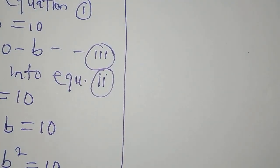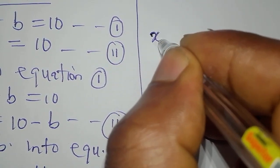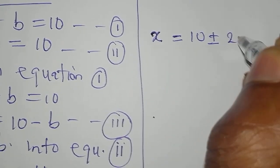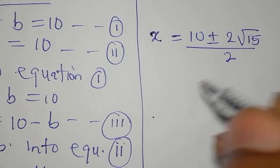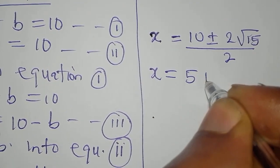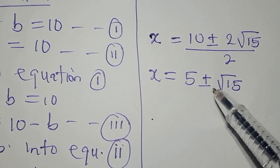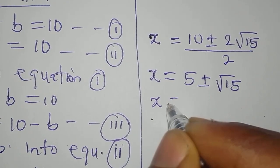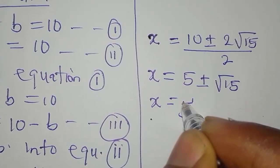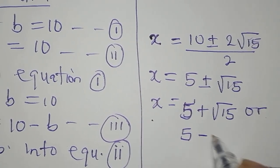We can let 2 divide into both numerator terms: 10/2 = 5 and 2√15/2 = √15. So x = 5 ± √15, meaning x = 5 + √15 or x = 5 - √15.